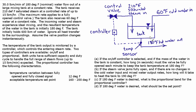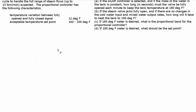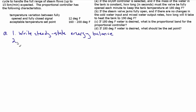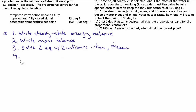Parts C and D are pretty quick at the end. For Part A, the steady-state scenario, we'll first write the steady-state energy balance. We'll find two unknowns — the mass flow rates of steam and cold water — so we'll write a mass balance as a second equation. With two equations and two unknowns, we can solve for both flow rates. Once we have the steam flow rate, we can find how many seconds per minute the valve should be fully open.